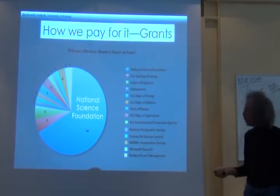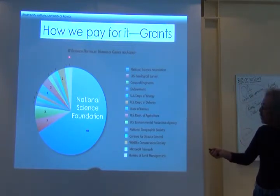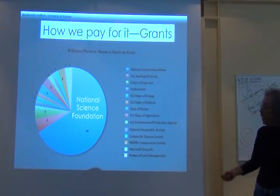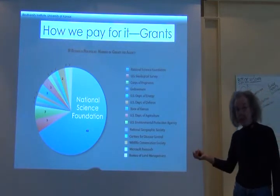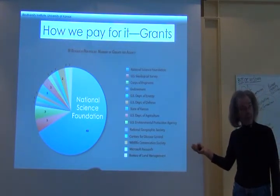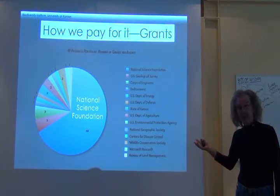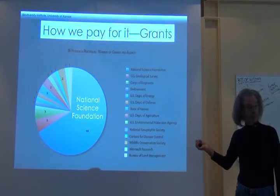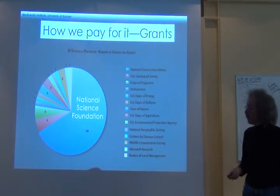We have 40 grants from the National Science Foundation and just one, two, or three from all of these other agencies. That's a terrible picture. We're very good at writing grants for NSF, but if the National Science Foundation gets a big cut, we're in serious trouble.